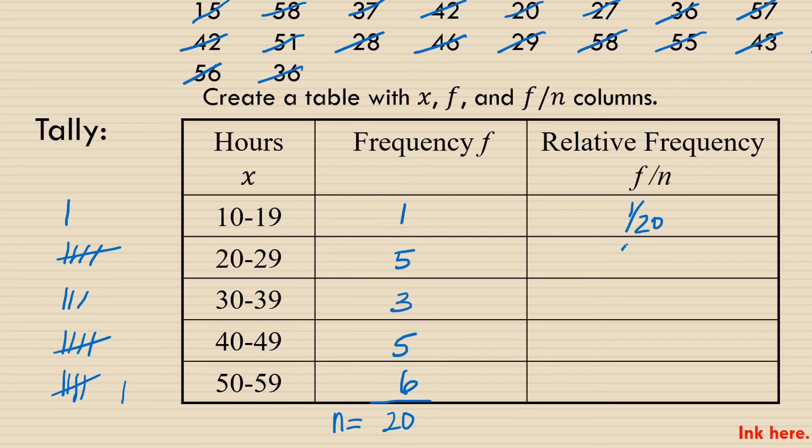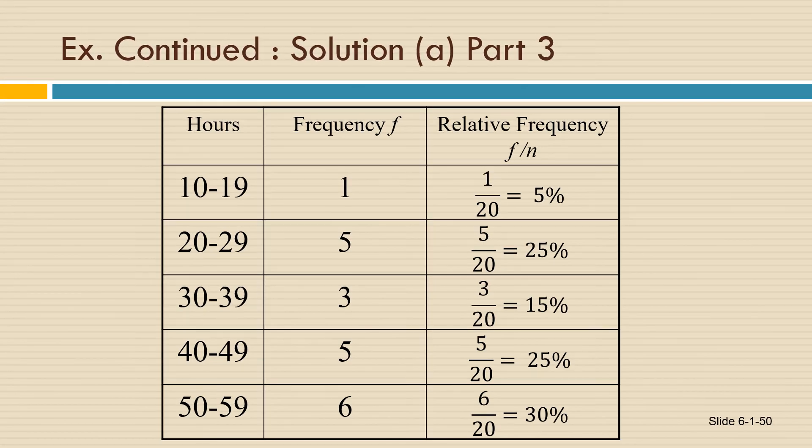1/20, 5/20, 3/20, 5/20, and 6/20 are the portion of the data values that fall into each category. If we want to keep them as fractions, we would reduce, but in this case, I want to write them as percentages.